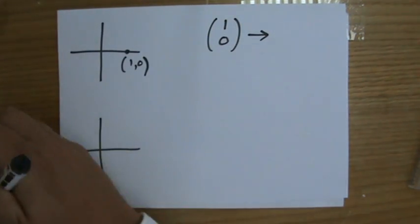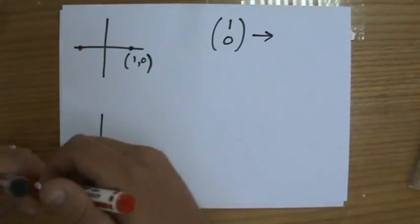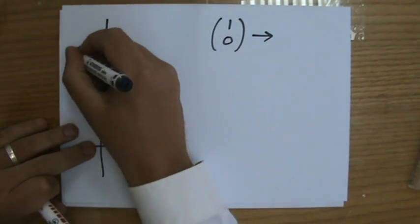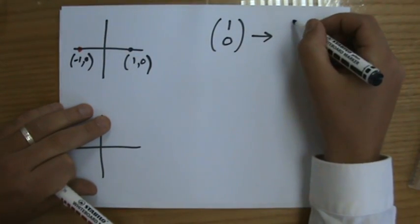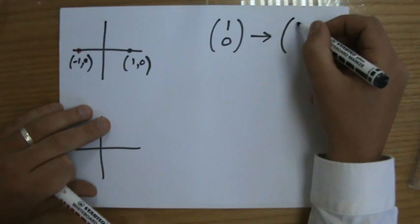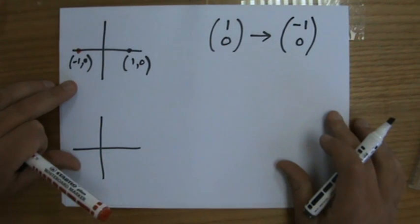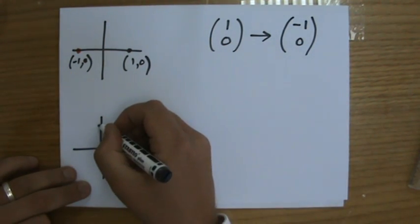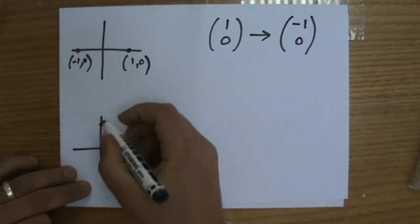I know it's a reflection in the y-axis, so what will happen with this point after a reflection in the y-axis? It's going to be on the other side. It's going to be here. And that is point (-1,0). So as a column vector, after the transformation it is going to be (-1,0).